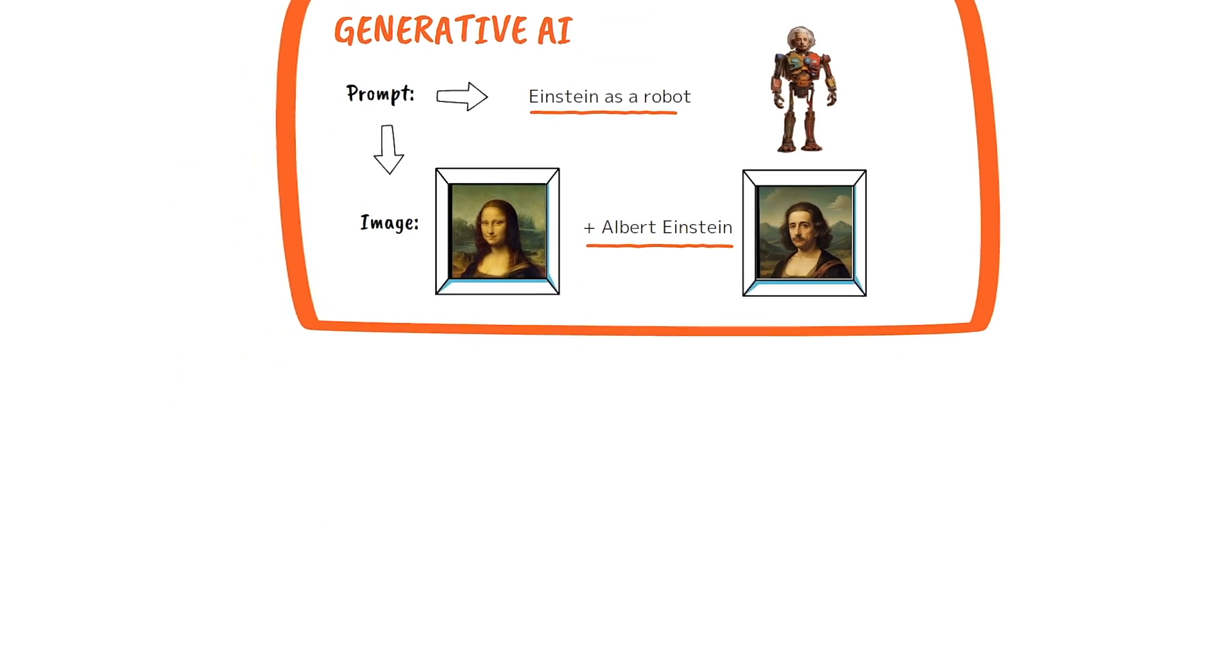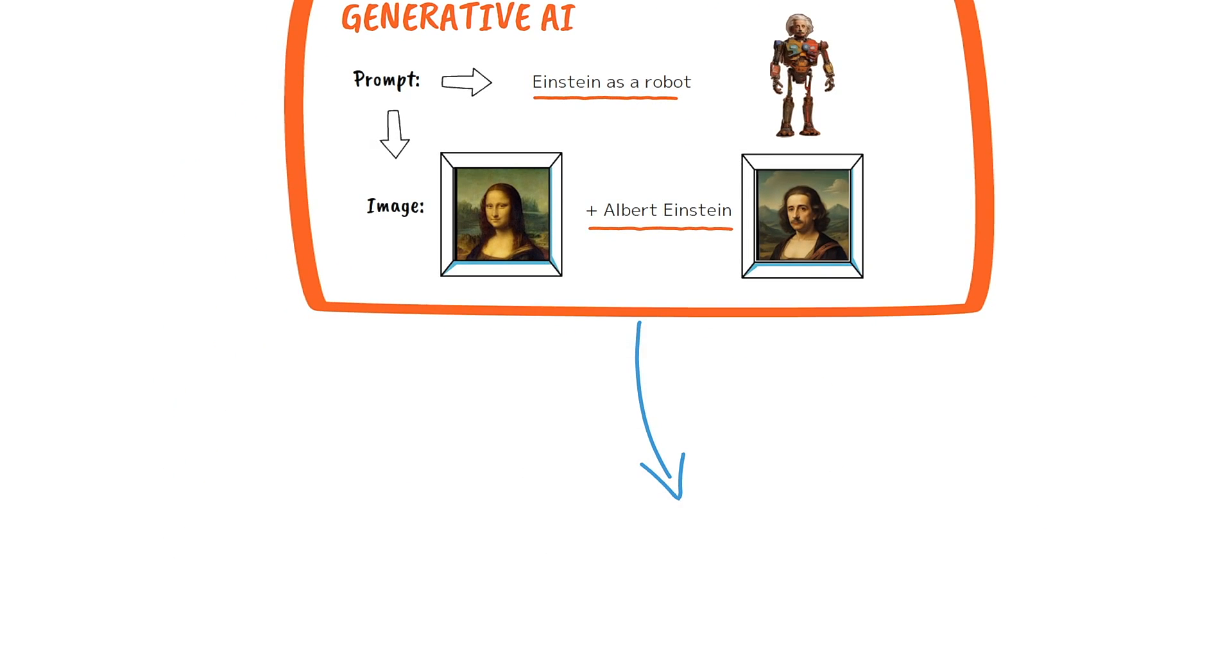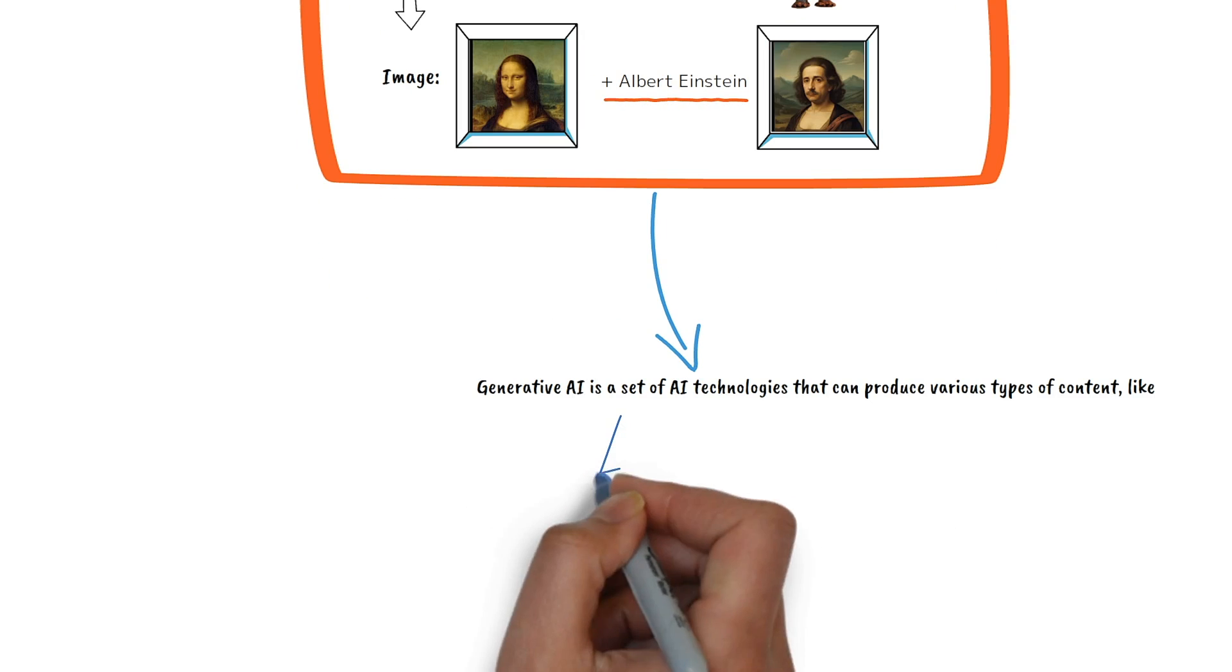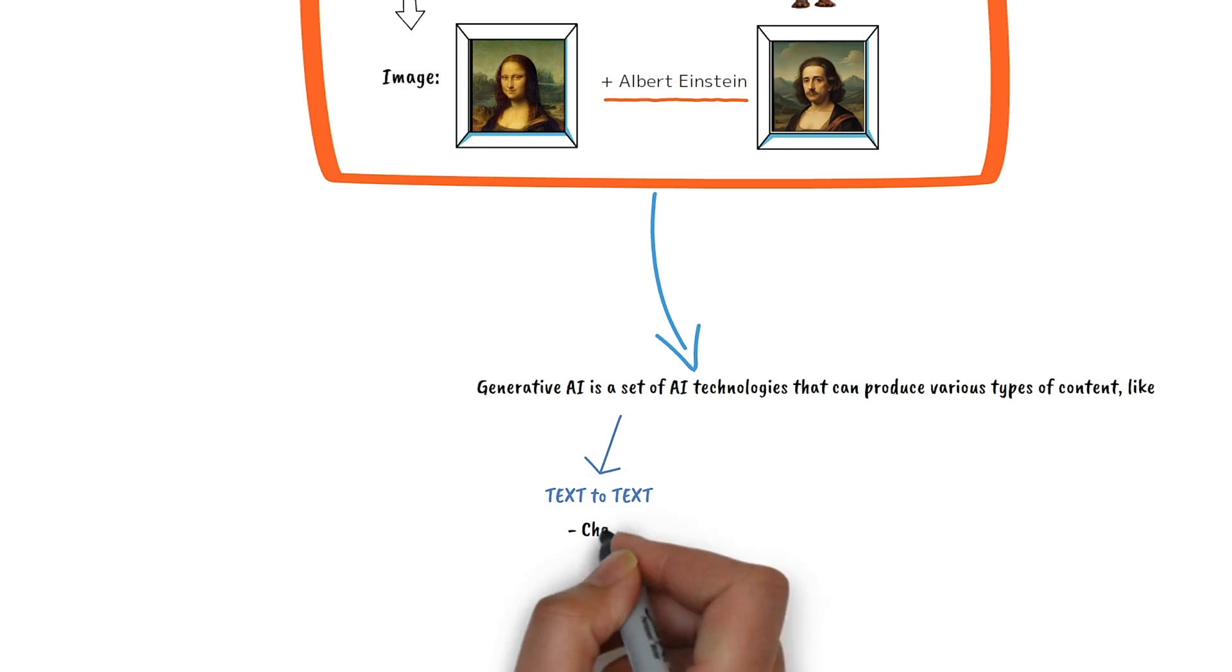Generative AI is not just used for image generation. It's a whole set of technologies used for various purposes. First we have text-to-text tools like ChatGPT, Gemini, Claude, Mistral, Lama or Grok.